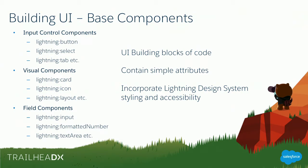There are basically three kinds of base components. Input controls like buttons and tabs. Then visual components which are UI elements — for example, a card kind of interface to show details. And then things like the grid system similar to Bootstrap that makes your page responsive based on the device — you can use Lightning Layout for that. These are shortcut components to use functionality that is already built in.